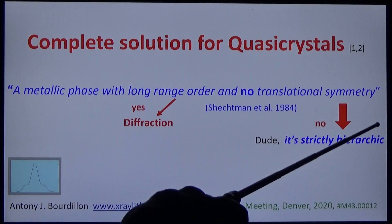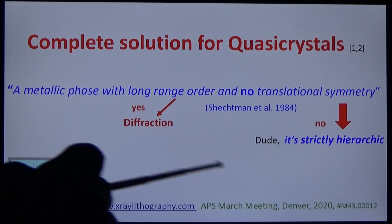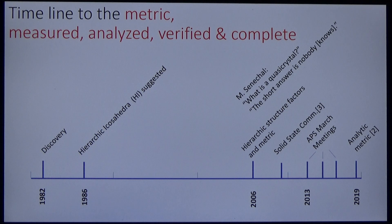The translational symmetry is strictly hierarchic. This timeline shows why I have to step lightly over the detail that is described in 10 journal articles, four monographs, three APS March meetings and elsewhere.